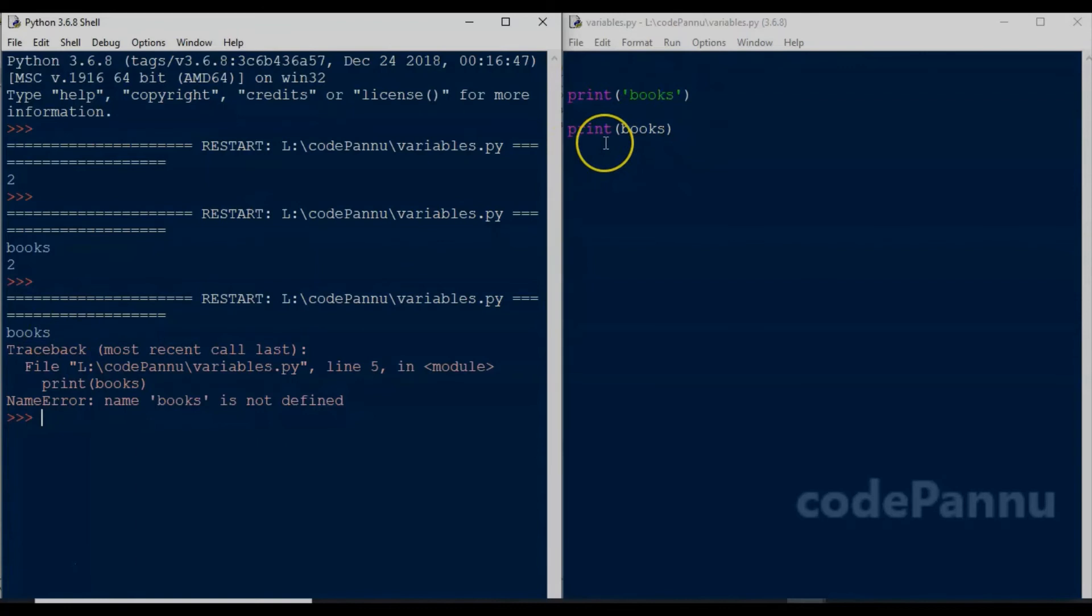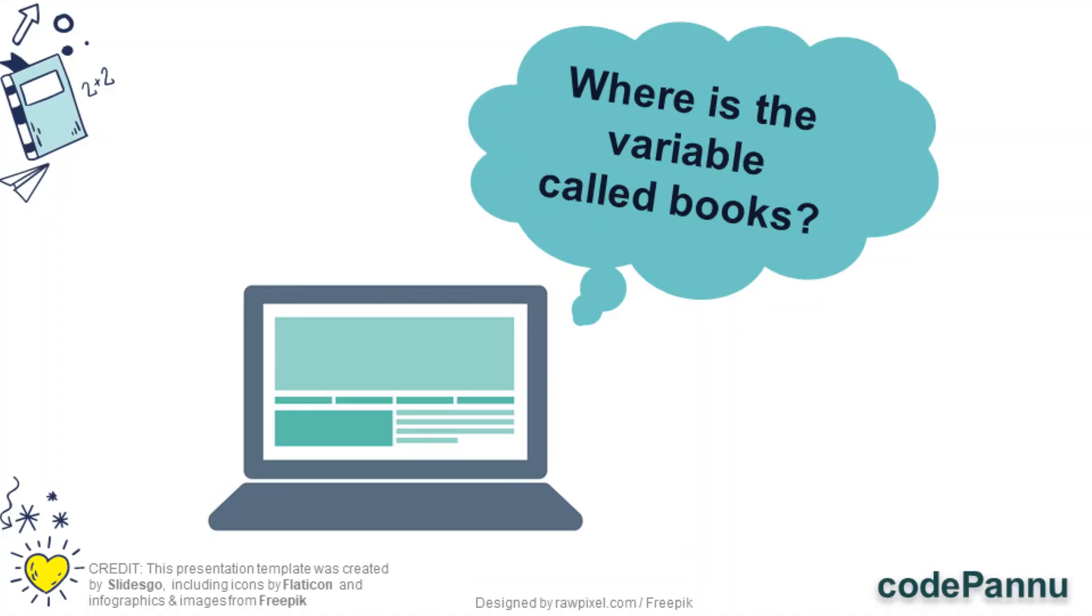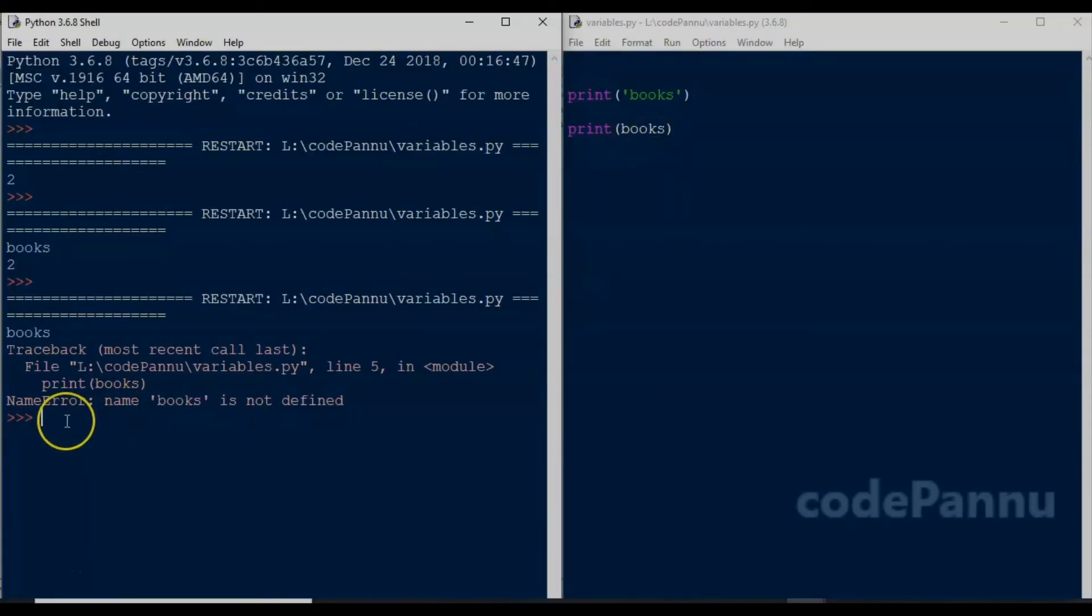So first Python will run the line print books. Next, it will try to run the next line which is print without quotes books. Now we have removed the variable called books equal to 2. So it is searching for the variable and since it does not find the variable, it gives an error.